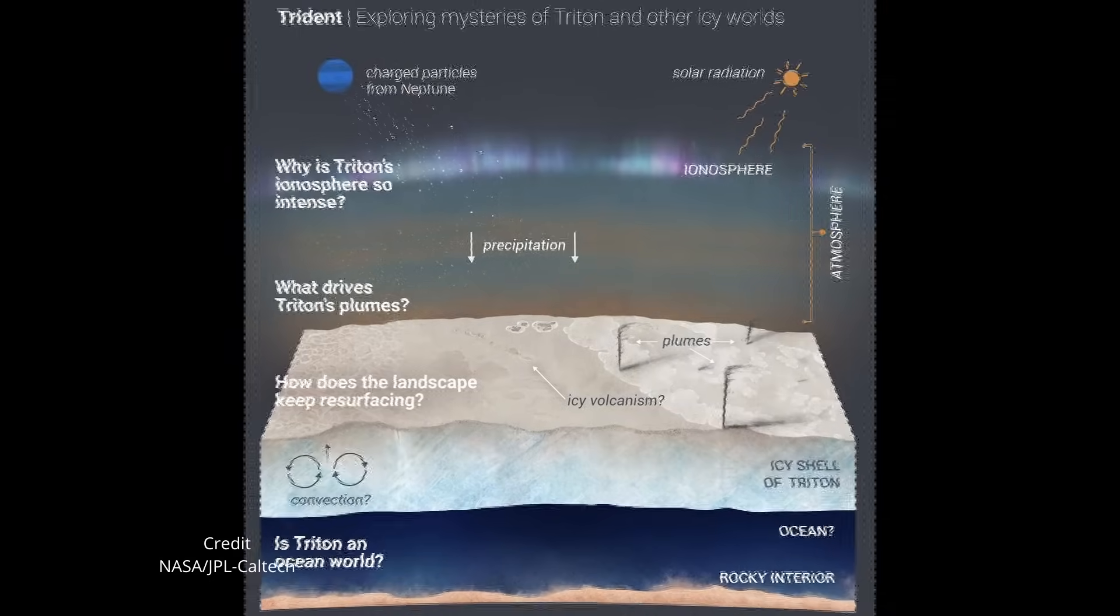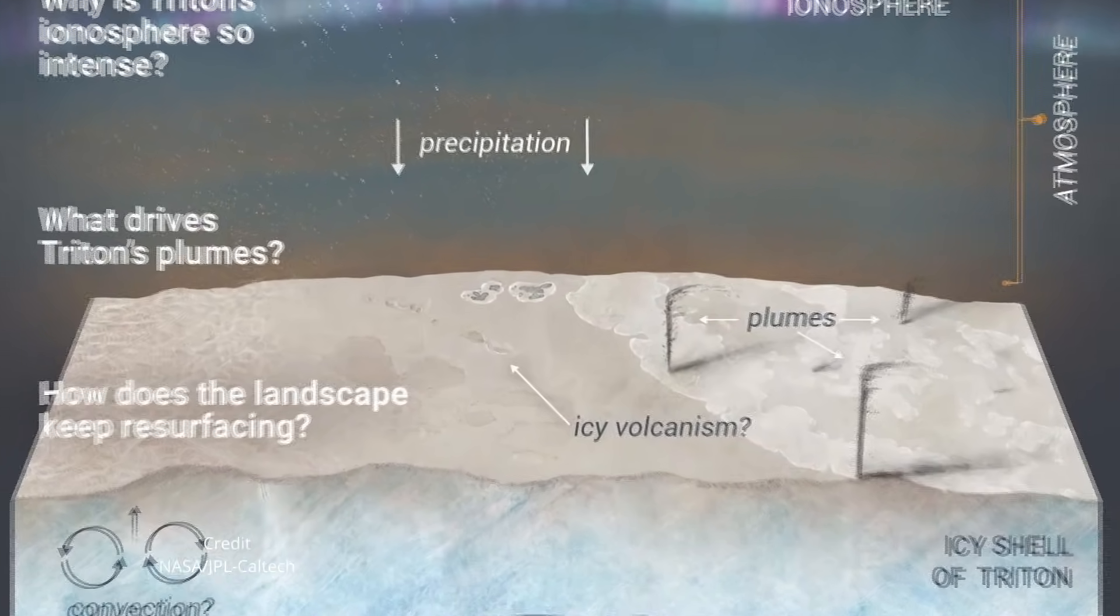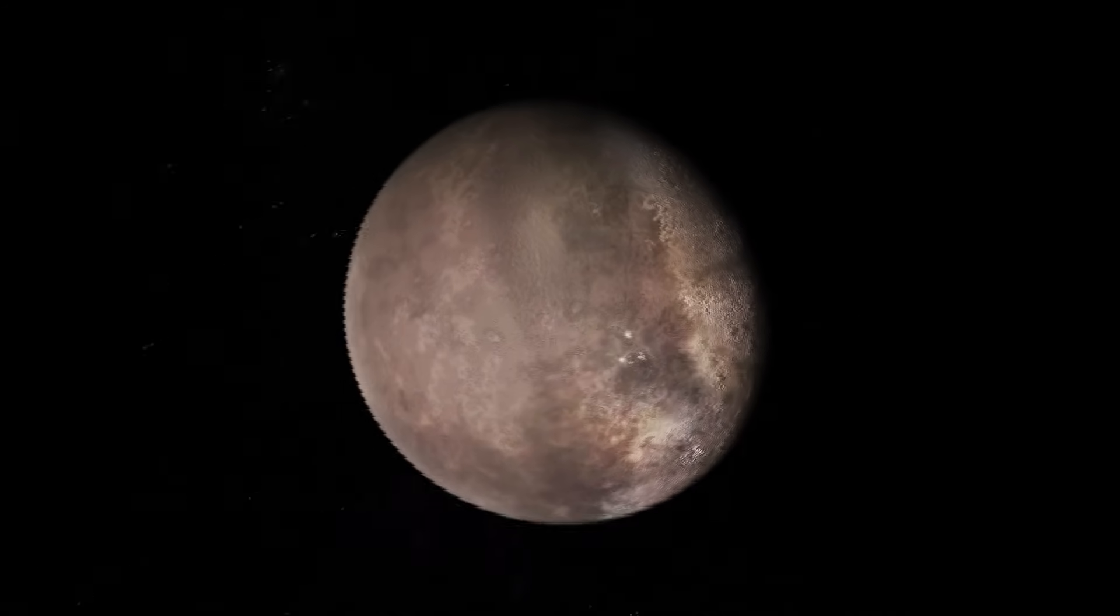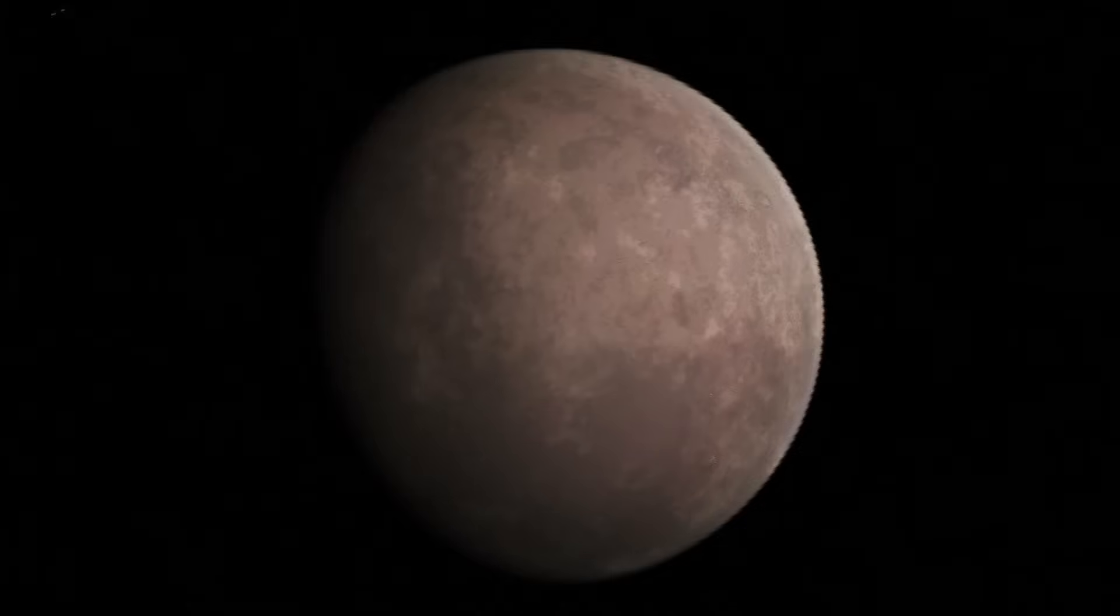Geysers that spew nitrogen gas and dark, dusty material up to 5 miles high into Triton's tenuous atmosphere. These eruptions are constantly repaving the surface, which is why Triton has very few craters and is one of the youngest surfaces in the solar system.